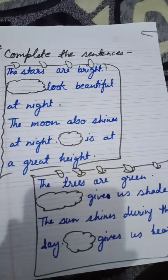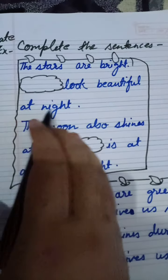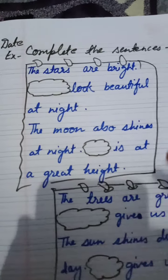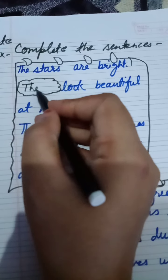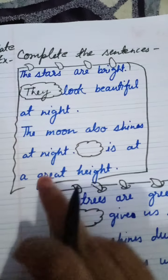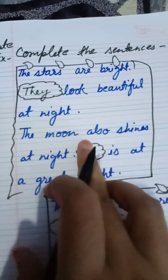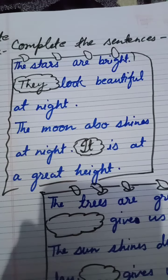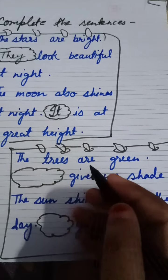Complete the sentence. First we will read it. 'The stars are bright — look beautiful at night.' Stars are more than two or three, they are plural, so we will write 'they' here. They look beautiful at night. 'The moon also shines at night.' Moon is a single one but it is neither male nor female, so we will write 'it'. It is at great height.